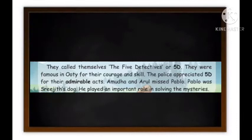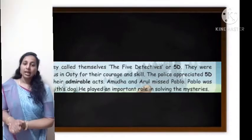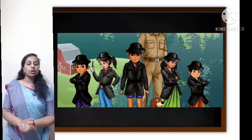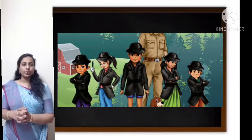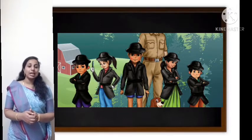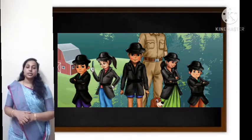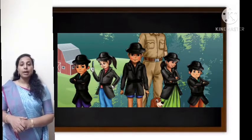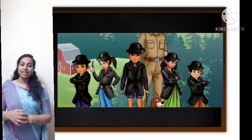Let's read the second paragraph now. They call themselves the five detectives, or 5D. They were famous in Ooty for their courage and skill. The police appreciated 5D for their admirable acts. Amuda and Arul missed Pablo — Pablo was Sreejit's dog. He played an important role in solving the mysteries. They were well known in the city of Ooty, and even the police appreciated them. Sreejit had a dog named Pablo who helped them find and solve mysteries.